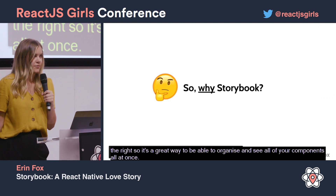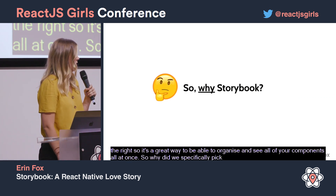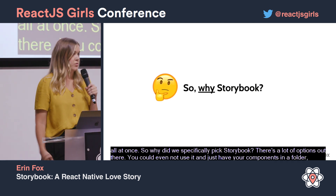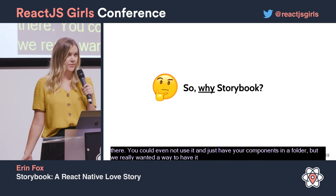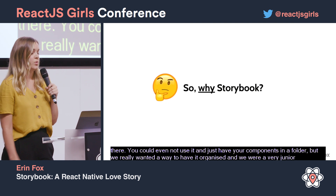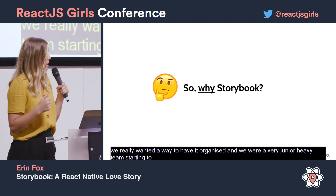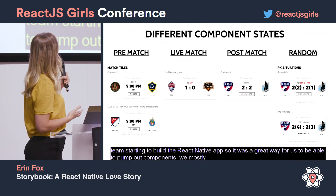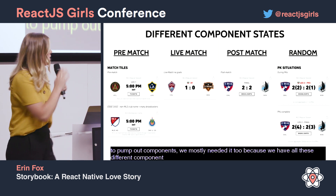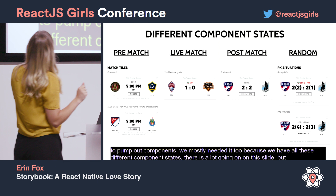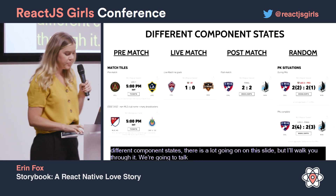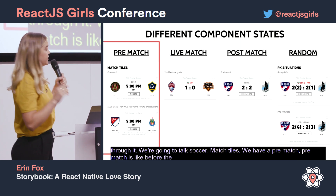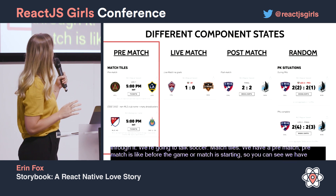So why did we specifically pick Storybook? There are a lot of options out there — you could even just have your components in a folder. But we really wanted a way to organize them, and we were a very junior-heavy team starting to build the React Native app. It was a great way to pump out components. We also have all these different component states — for example, match styles. We have a pre-match state before the game starts, where you can see tickets and two games. We could craft that in Storybook.